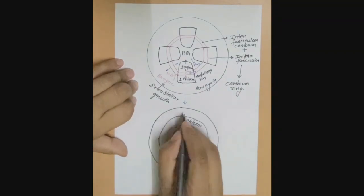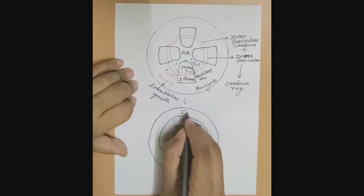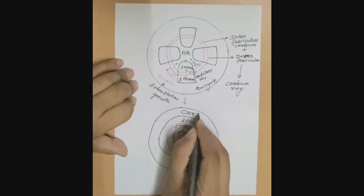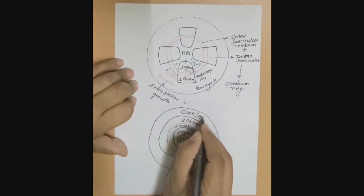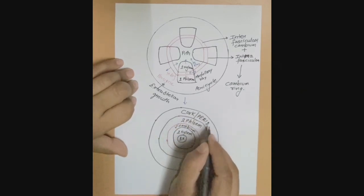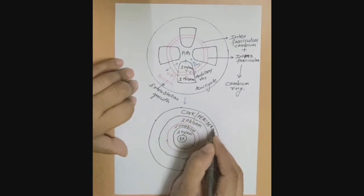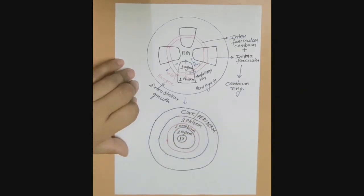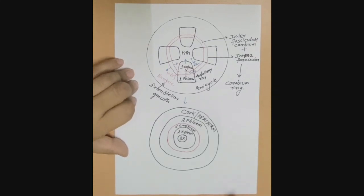As a result, we have a cork which has a periderm. So this is our intrastelar growth in dicot stem. Thank you and keep watching the video.